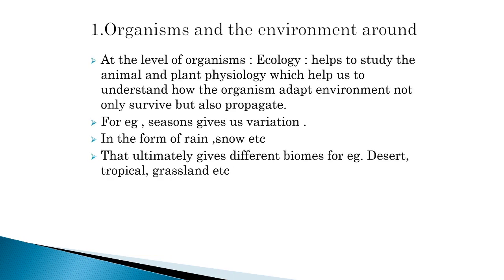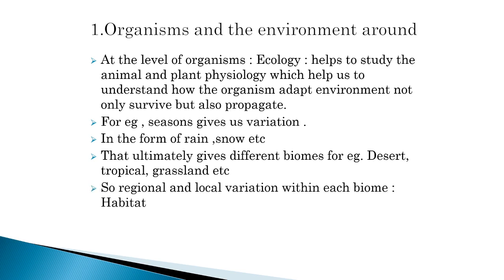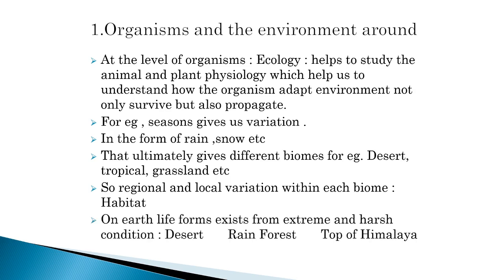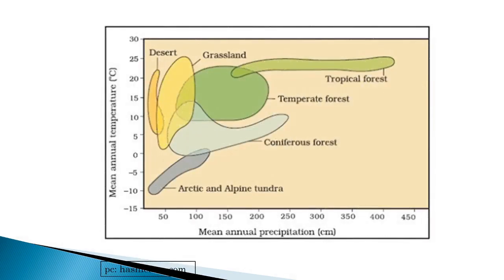Let us start with our first topic: organisms and the environment. At the level of organisms, ecology helps to study animal and plant physiology, which helps us to understand how organisms adapt to the environment and not only survive but also propagate. For example, seasons give us variation in the form of rain or snow, which ultimately gives different biomes like desert, grassland, tropical, etc. Regional and local variation within each biome is called a habitat, and on Earth, life exists from extreme and harsh conditions like deserts to rainforests to the top of the Himalayas.